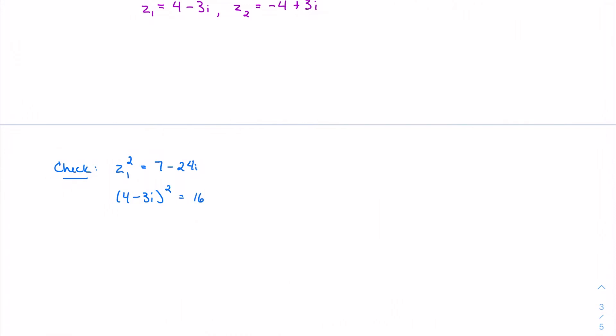So 16, square the first term, twice the product, square the last term. i squared is negative 1, so this is 16 minus 9 which is 7, minus 24i. Which means if I were to take the square root on both sides, 4 minus 3i is equal to the square root of 7 minus 24i.